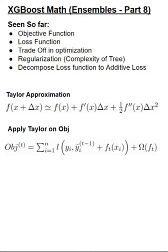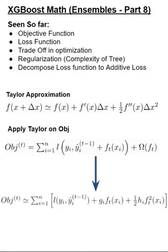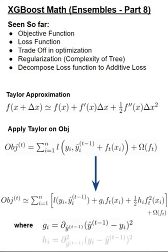So when we apply it on our objective function, which is what we had in the earlier slide, now what we get is we get a term g i and h i as new terms in the new formulation. The g i term indicates the first-order differentiation and the h i term indicates the second-order differentiation done for approximating the functions.